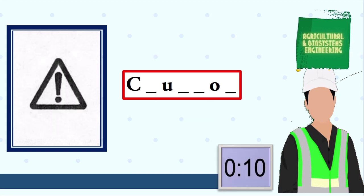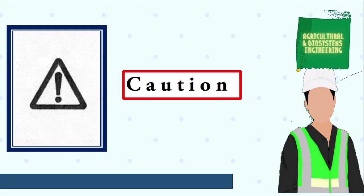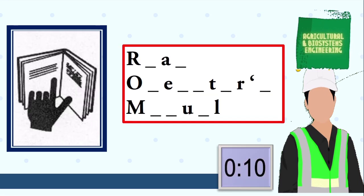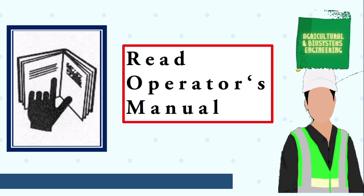Next symbol, your 10 seconds starts now. The answer is caution. Next symbol, your 10 seconds starts now. The answer is read operator's manual. Next symbol, your 10 seconds starts now.